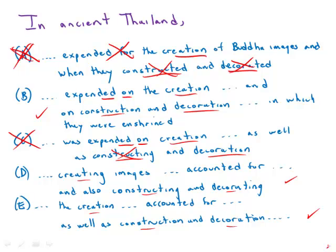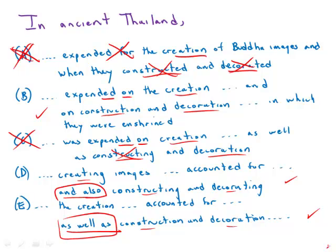So we've eliminated A and C. Now we go down to D and E, and we have something kind of strange here. For example, if we read D: creating images of Buddha accounted for much of the local artisan's creative energy, and also constructing and decorating the temples and shrining them. The 'and also' is an unclear connection — it's tacked on to the end. Both 'and also' and 'as well as' turn the last two verbs into kind of tack-ons, and it's not clear that we actually have a parallel structure.